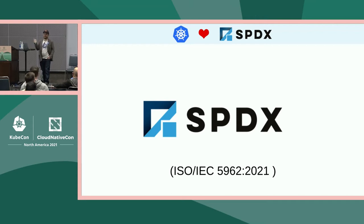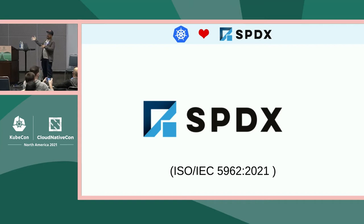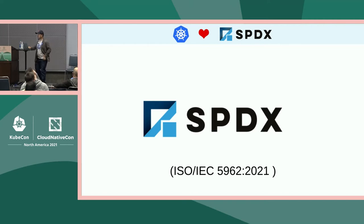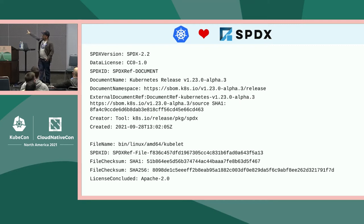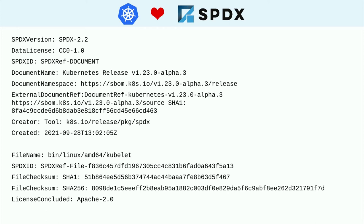If you were at the keynote this morning you're aware there are two great efforts going on to produce SBOMs. We went the Linux Foundation way, which is SPDX, now an international standard. SPDX looks like this — it has a header for the SPDX document and a fragment listing a file, with information about the document, an external reference to another document, and then a file entry with hashes and license information.